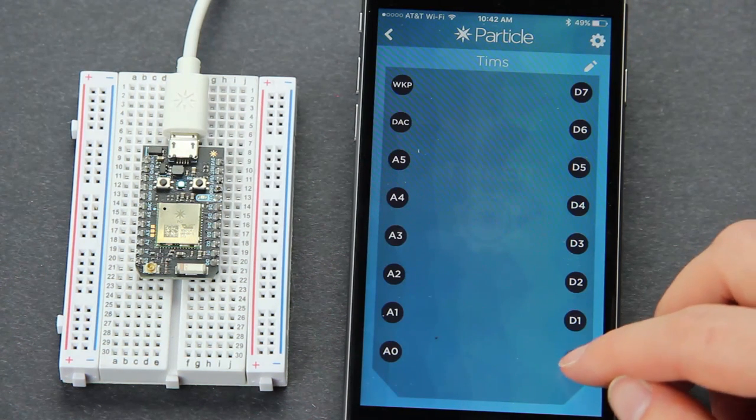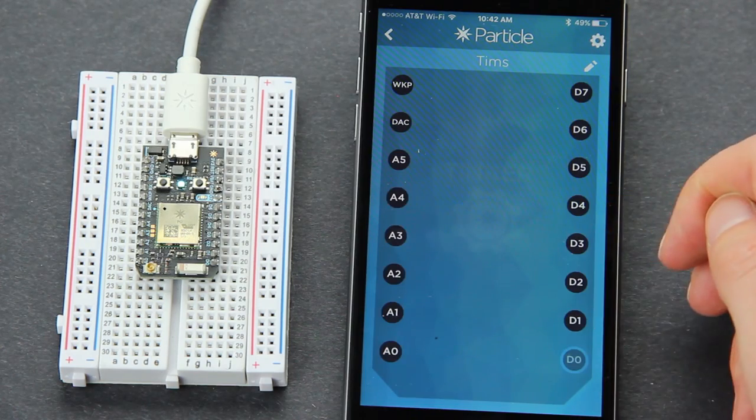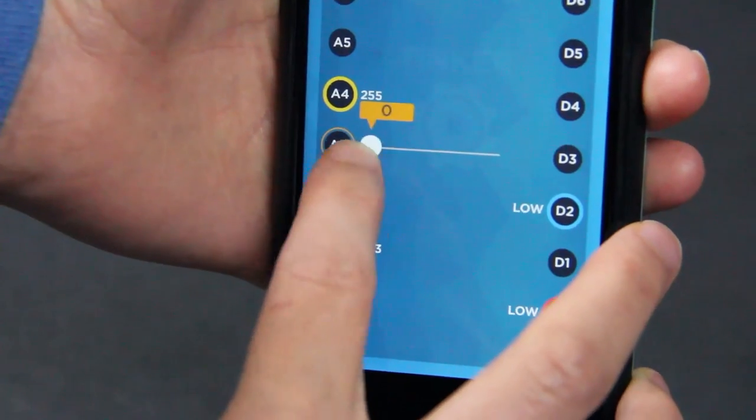To look at how to send and receive digital and analog signals without having to write any code, we are going to use a Photon, a phone, and a multimeter.